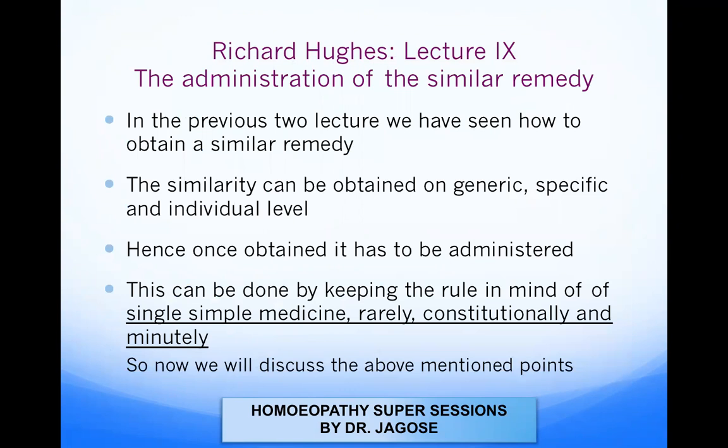In the previous two lectures, we have seen how to obtain the similar remedy. The similarity can be obtained on a generic, specific, and individual level. Generic meaning on common symptoms, specific meaning on characteristic symptoms, and on the individual level meaning the totality of the symptoms, which is naturally based on characteristics.